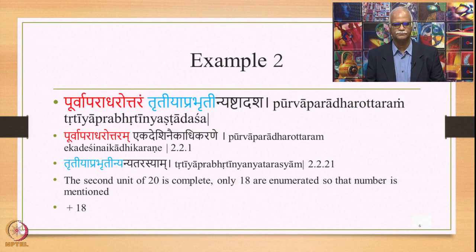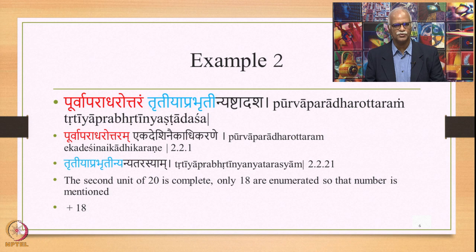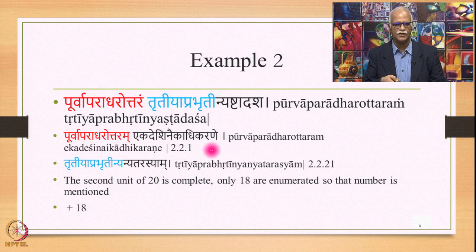Here is another example, taken from the smallest of the Padas which consists of only 38 Sutras. That means there is only one complete unit of 20 Sutras and the second unit of 20 Sutras is not complete — there are only 18 Sutras in this second unit. This is how they are mentioned. The first Sutra in 2.2.1 is Purva Paradharaottaram Ekadeshe Naikadhikarene.